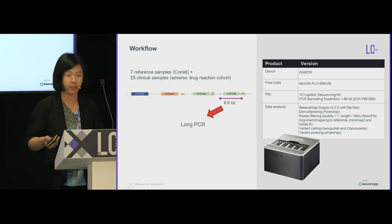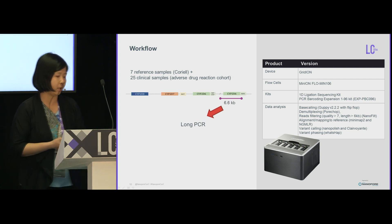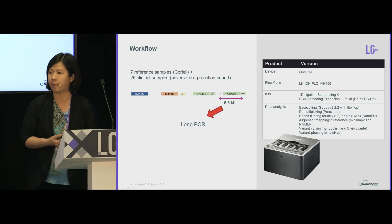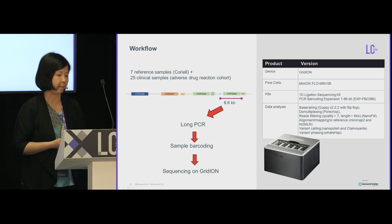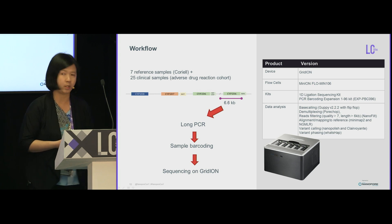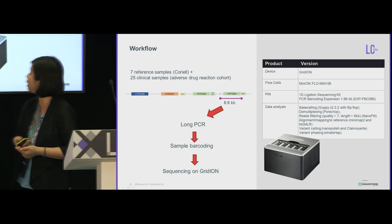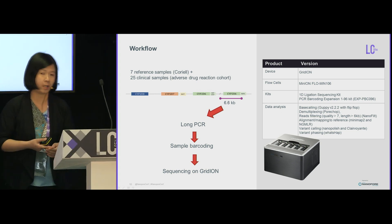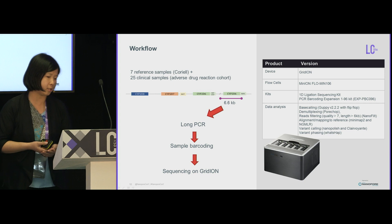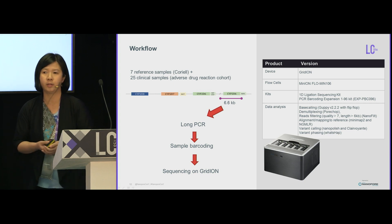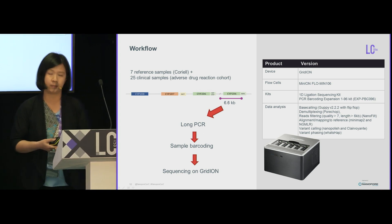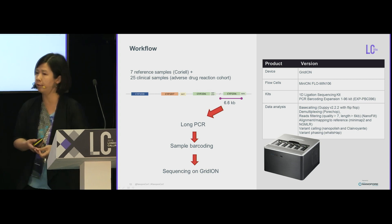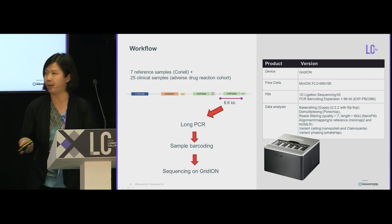This is an amplification-based method. We first amplify the whole CYP2D6 region, including upstream and downstream regions, then use the PCR barcoding kit to barcode samples and enable multiplexing in one sequencing run. We used the R9.4 flow cell with the version 9 1D ligation kit. For data analysis — performed earlier this year — we used the first Guppy version with flip-flop basecalling, then Porechop and NanoFilt to demultiplex and filter for quality and length. We used two different mapping and variant-calling tools, and lastly WhatsHap to phase the variants.